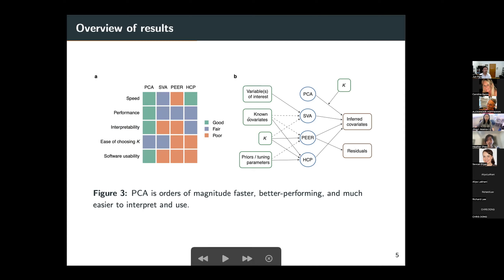And on the right-hand side here, I summarized the inputs and outputs of the different methods. Of note, PEER outputs both inferred covariates and residuals of the expression values. So the user needs to choose which set of output to use in their QTL analysis. But mainly, each of these methods output inferred covariates, which can be included as covariates in the QTL step.